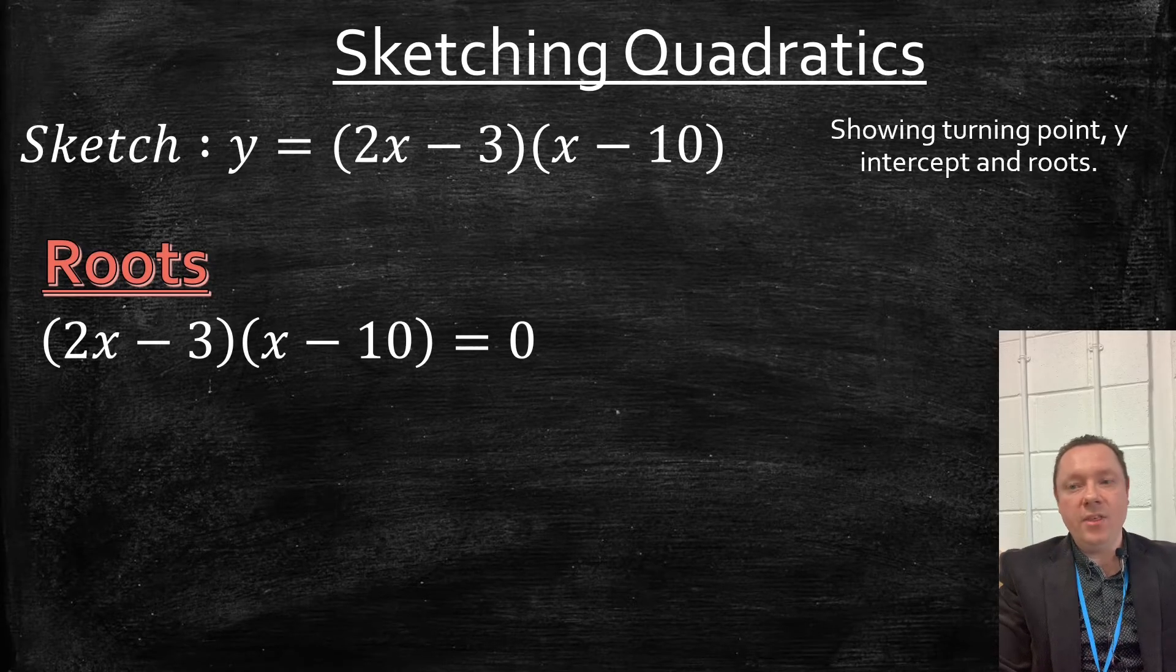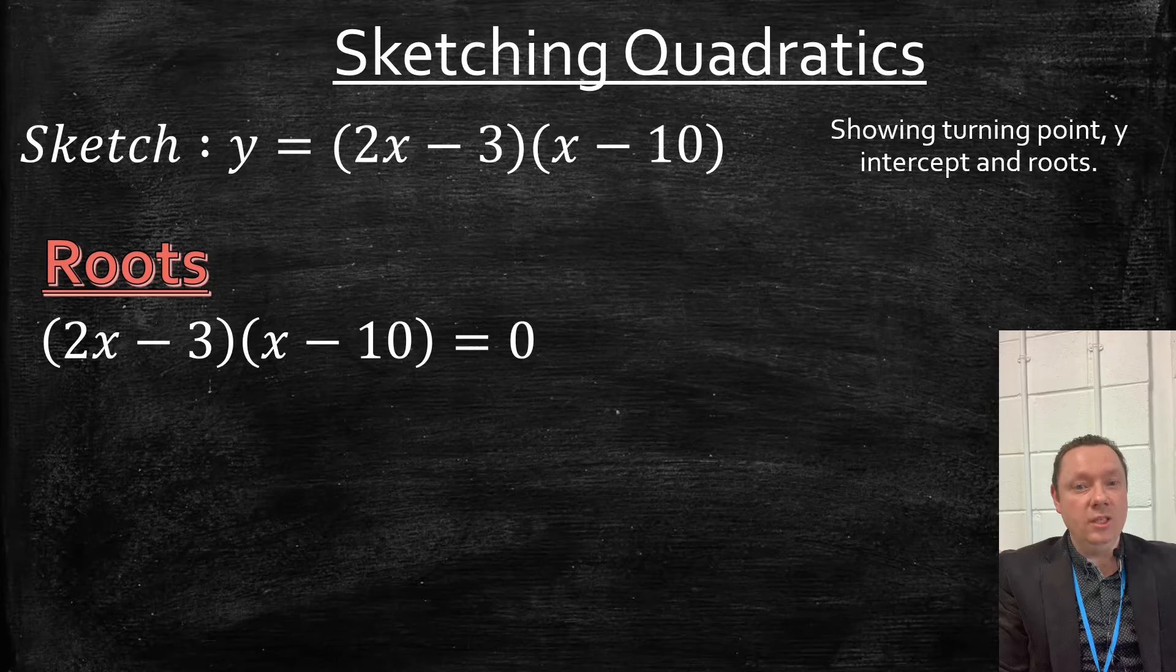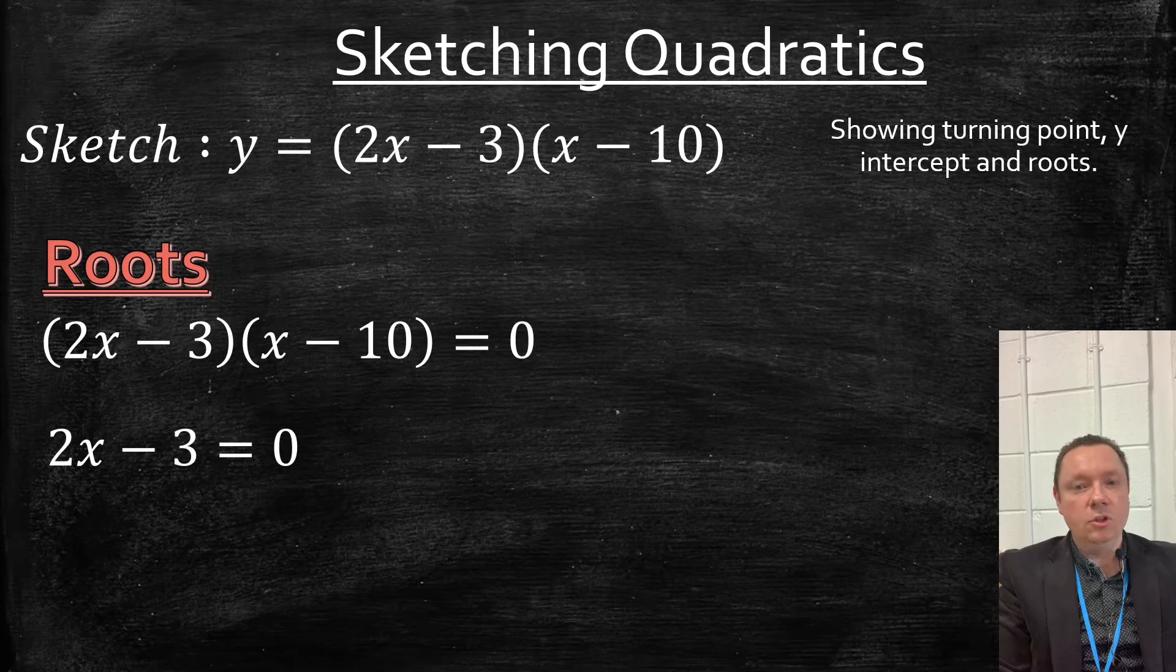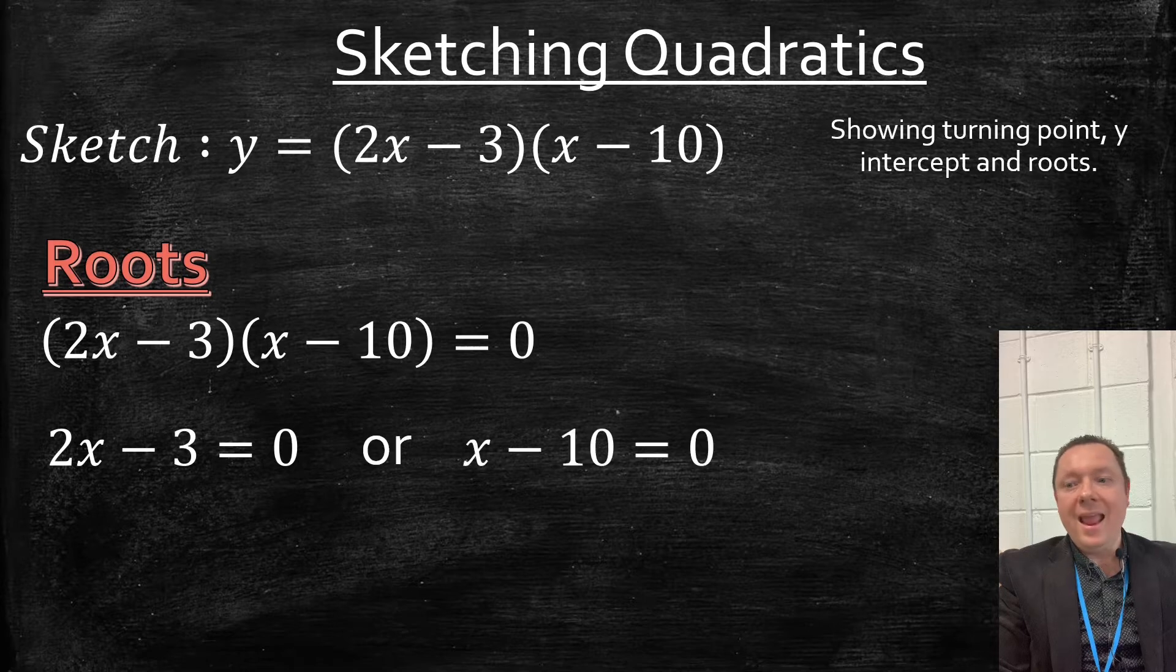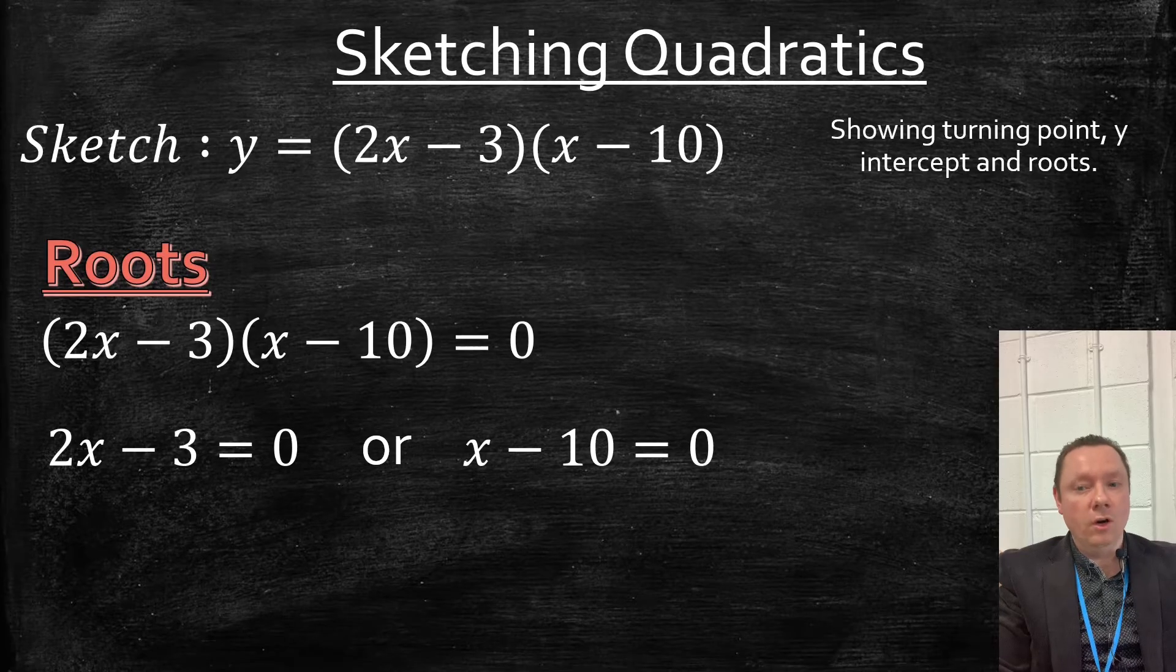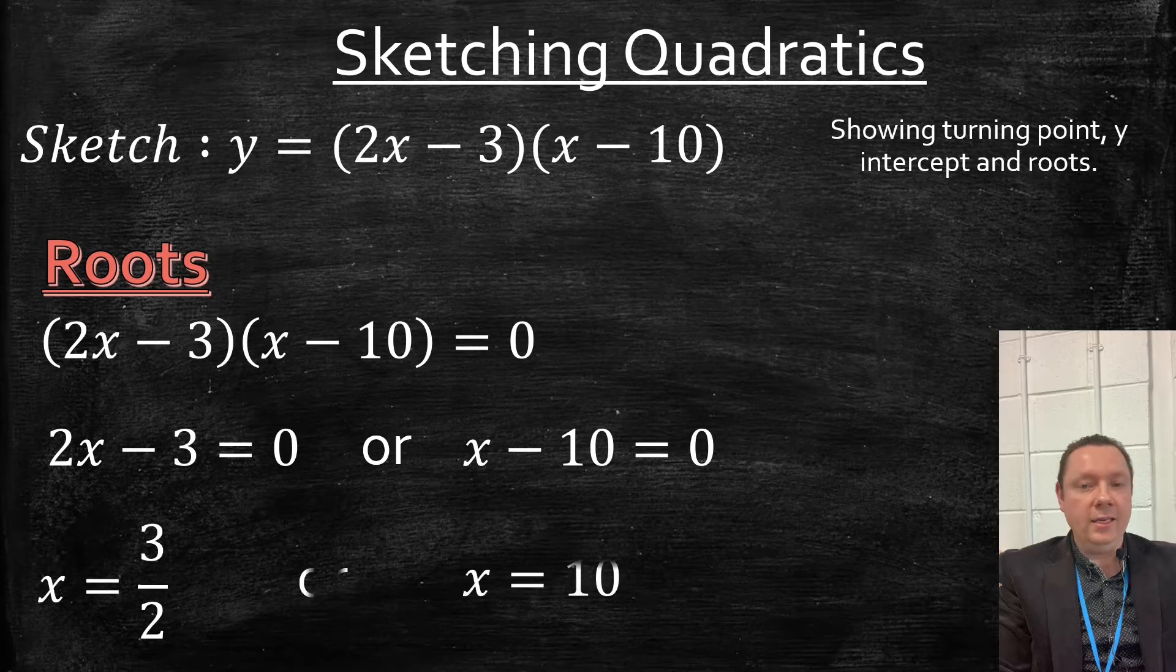We've got (2x - 3)(x - 10) = 0. Nice and easy to solve. Each bracket equals 0. So we've got 2x - 3 = 0, or x - 10 = 0. Solve the first one: -3 becomes +3 over 2, so it's x = 3/2. And the other one, x must be 10. So we've now got our roots.